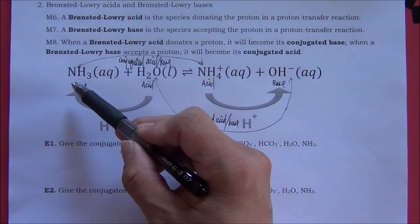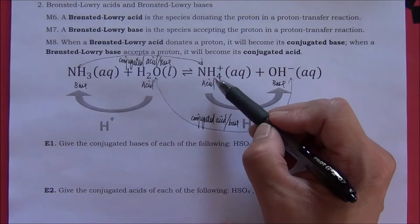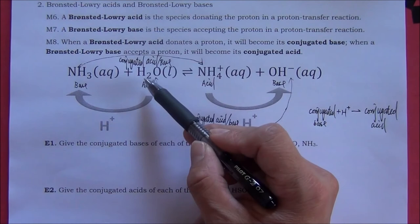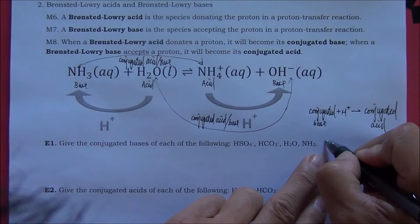In summary, when a base accepts a proton it will become a conjugate acid. If a conjugate acid loses a proton, it will become the conjugate base.